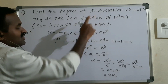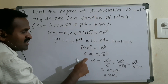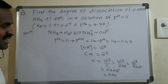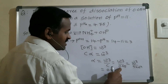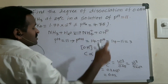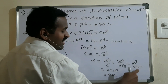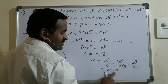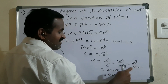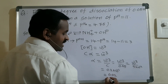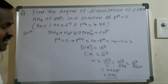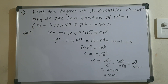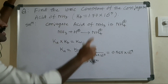Since OH⁻ ion concentration = Cα, we can solve for alpha: α = 10⁻³ / C. The concentration is given as 0.05 = 5 × 10⁻². So α = 10⁻³ / (5 × 10⁻²) = (1/5) × 10⁻¹ = 0.2 × 10⁻¹ = 0.02. The degree of dissociation is 0.02.